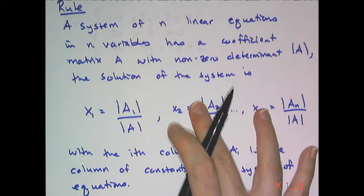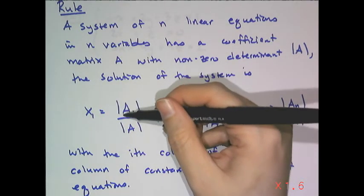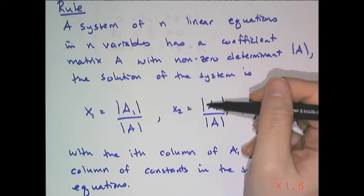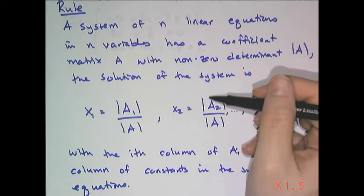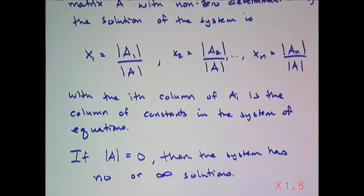So a fancy way of saying I'm going to replace the coefficients of x sub 1 with the constants here, I'm going to replace the coefficients of x sub 2 with the constants here, so on and so forth, and the coefficients of the nth variable with the constants in this one. And of course, if the determinant is 0, then the system has either no solutions or infinitely many solutions.